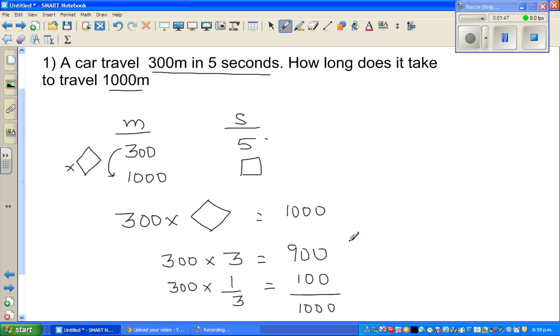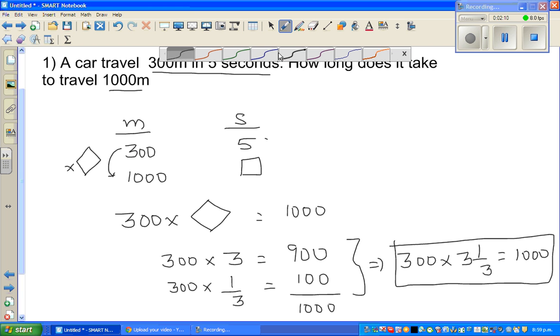So this means, this implies, you can say 300 times 3 and one third gives you 1000. If you multiply 300 with 3 and one third, you'll get 1000. We'll check it on a calculator later, but we're trying to do without the calculator. So if this is a ratio or proportion, 300 times 3 and one third gives you 1000. To get this answer, you should multiply 5 with same number which is 3 and one third. So for this, I'll go 5 times 3 and one third.